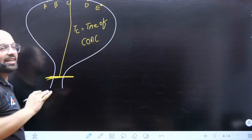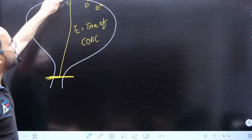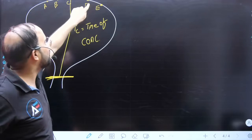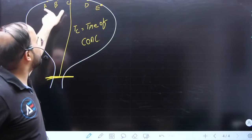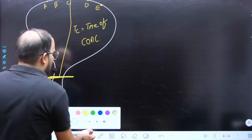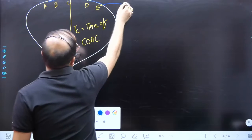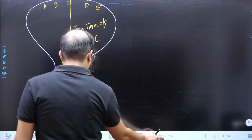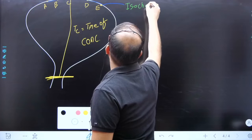So, points with the same time of concentration — means if water falls at a, b falls at a, c falls at a, d falls at a, e falls at a — anywhere in these 5 points, it takes the same time to come here. If there is a line joining these 5 points, what will that line be called? Isochrone line.